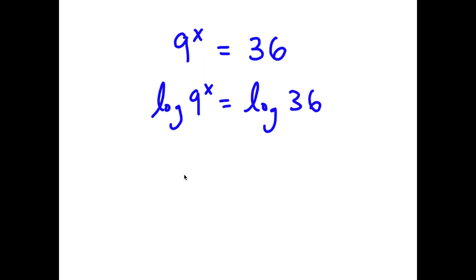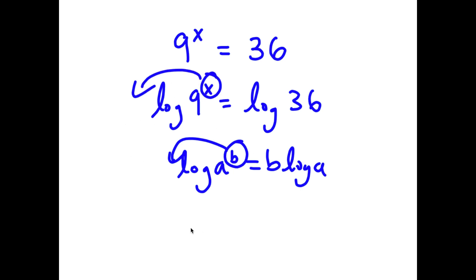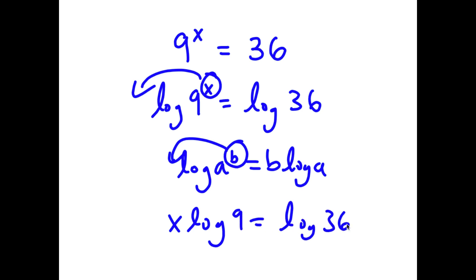If I have something in the form log a to the power of b, I can move b to the front, so now I have b times log a. So for log 9 to the power of x, I move x to the front, so now I have x times log 9 is equal to log 36.